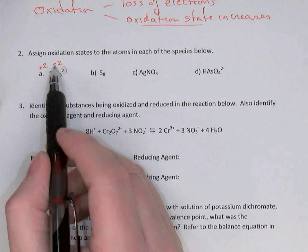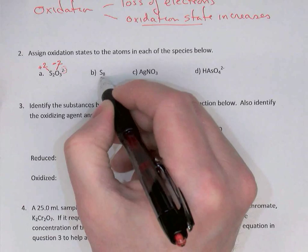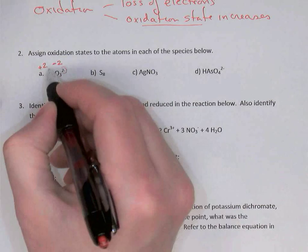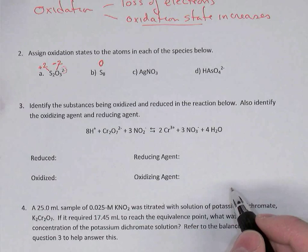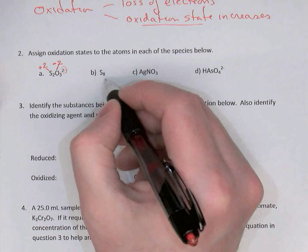So there's sulfur at plus two and oxygen at minus two. Part B says S8. I recognize that as the element sulfur — a form of elemental sulfur — so by definition its oxidation state would be zero. Each atom there has zero oxidation state.